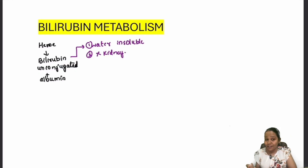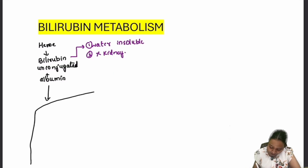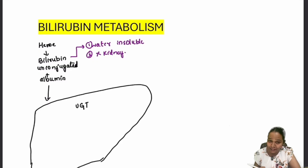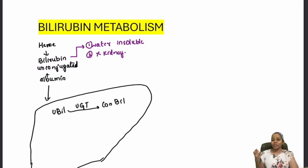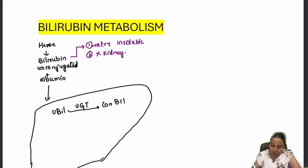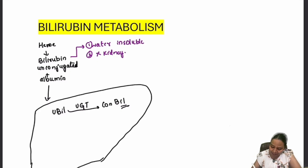The body needs to excrete this bilirubin, so it brings it to the liver — the main hero. In the liver, there is an enzyme called UGT which conjugates bilirubin, converting unconjugated bilirubin into conjugated bilirubin. This conjugation happens in the liver, similar to how bile acids become bile salts. Once conjugated, bilirubin becomes water soluble and can be excreted, all happening inside the hepatocyte.